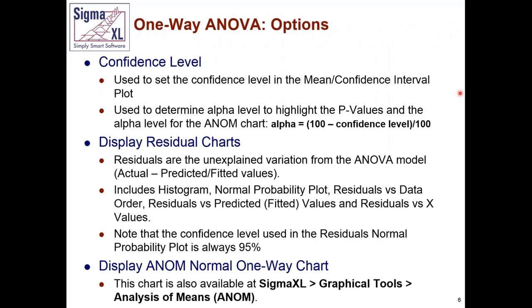We have the confidence level option: when we talk about alpha in the ANOM chart or highlighting p-values in red, the thresholds are determined from the confidence level. Specifying 95% sets alpha to 0.05. We've added residual plots similar to those in two-way ANOVA — histogram, normal probability plot, residuals versus data order, residuals versus predicted or fitted, and residuals versus X values. You also have the option to display the ANOM normal one-way chart.